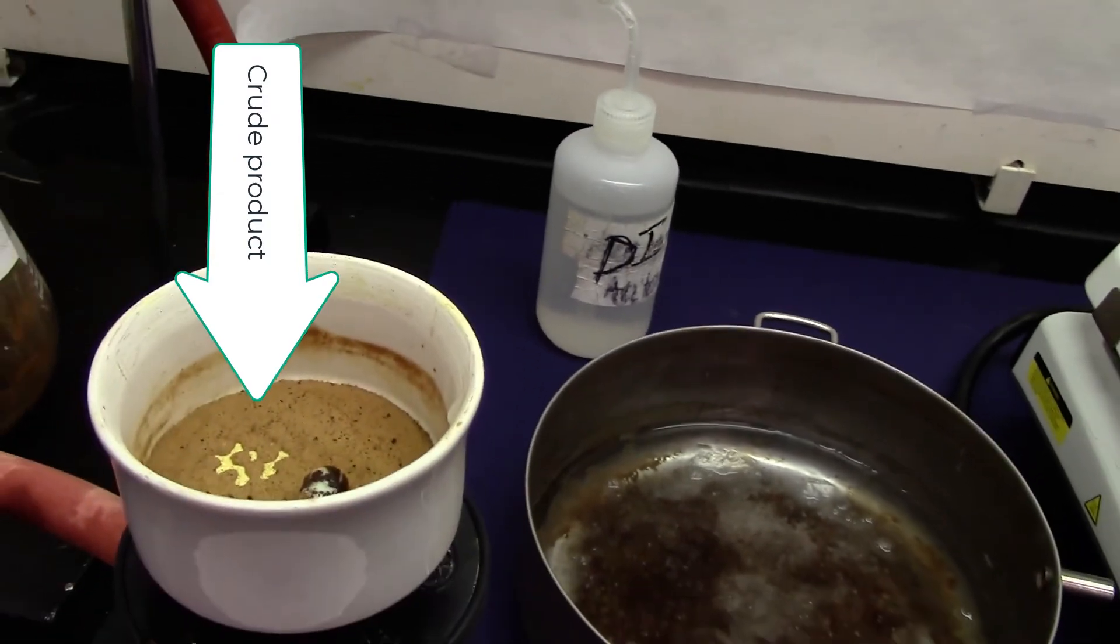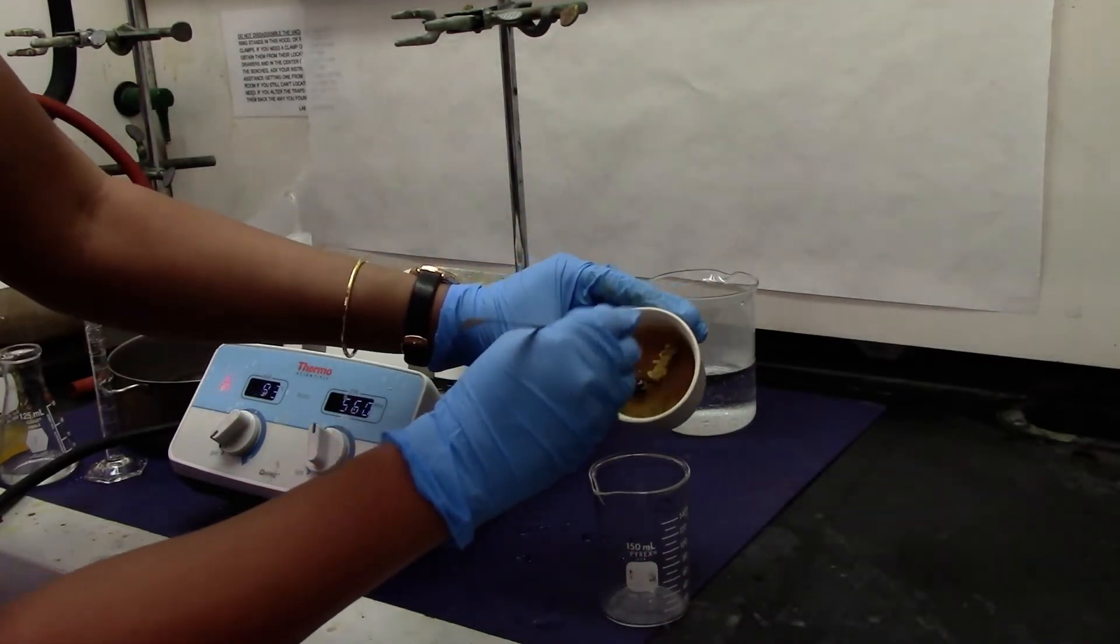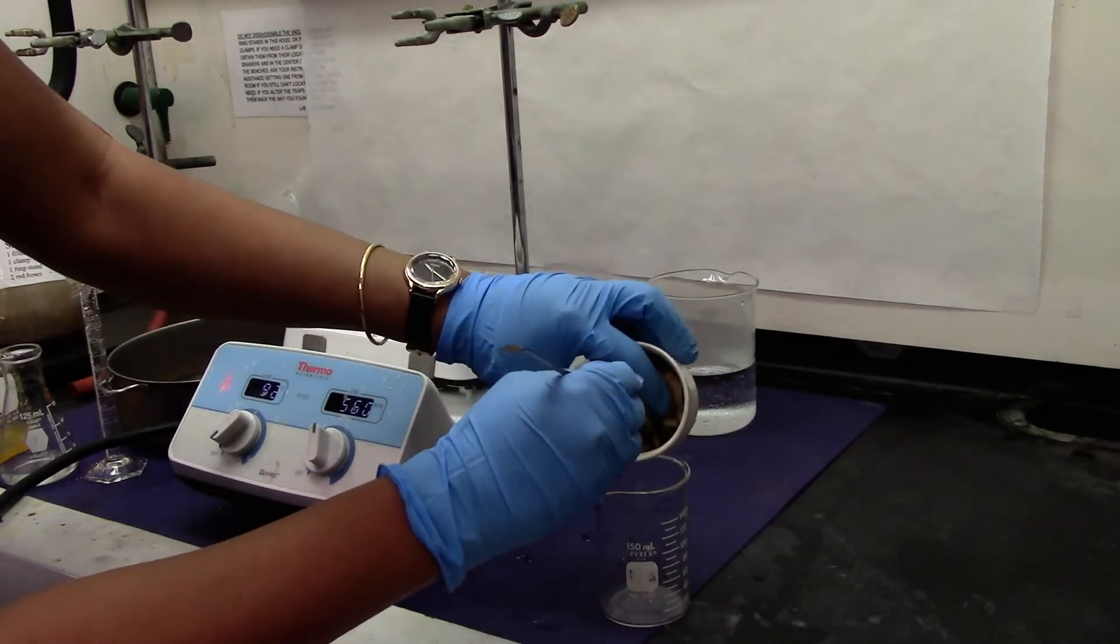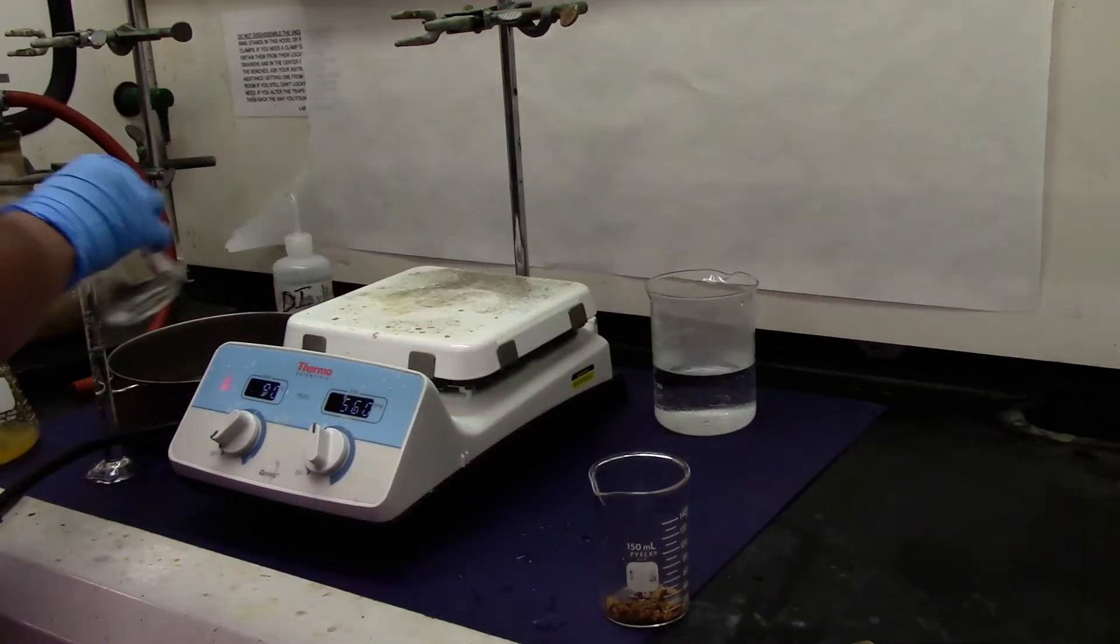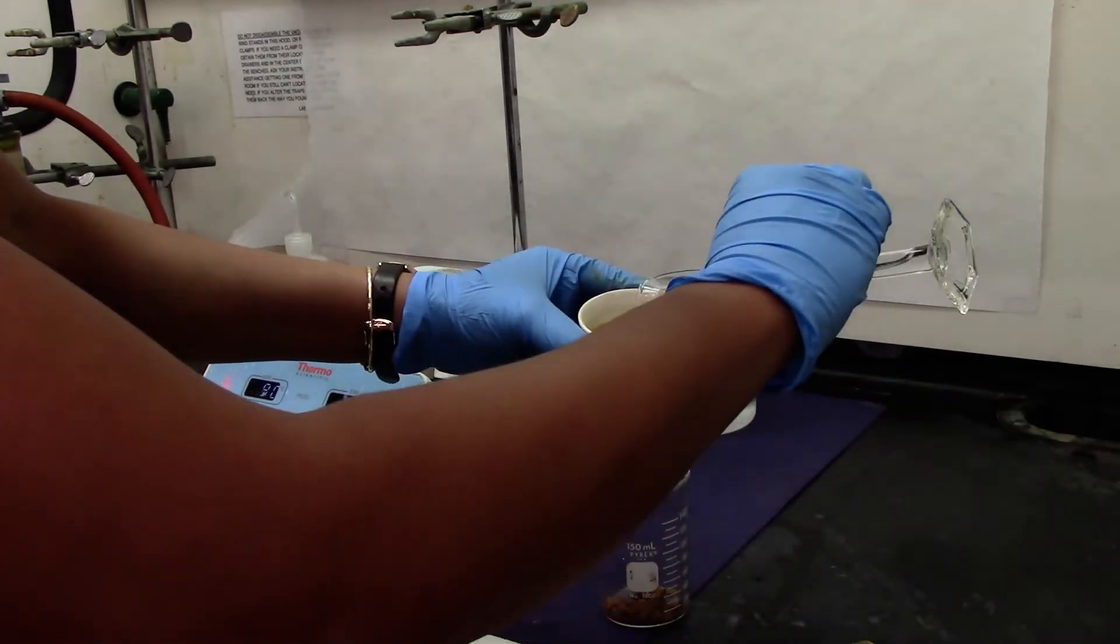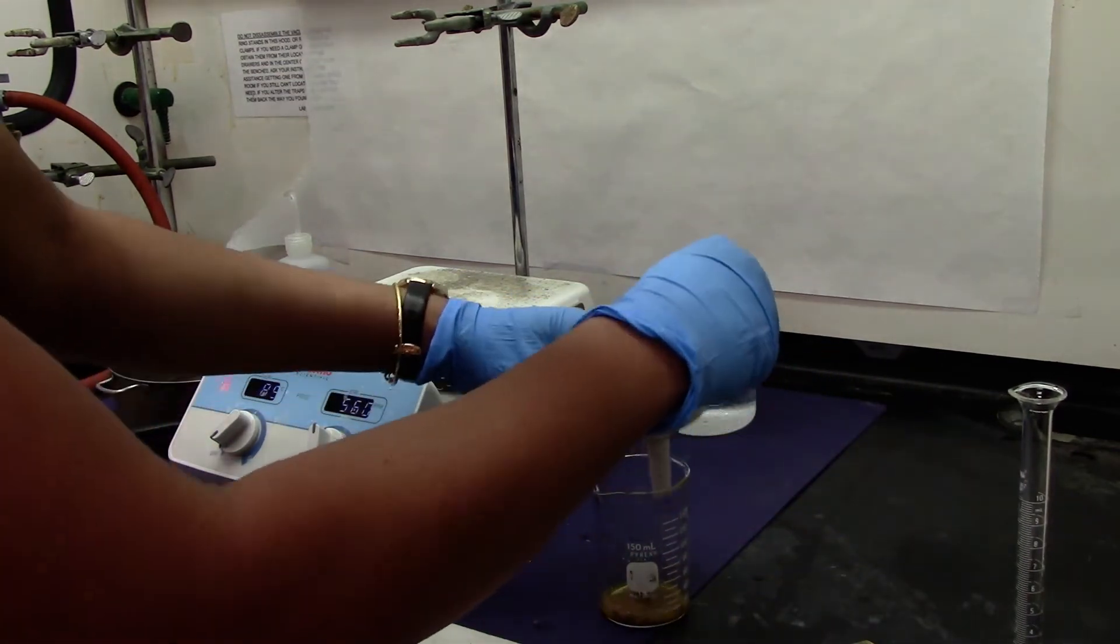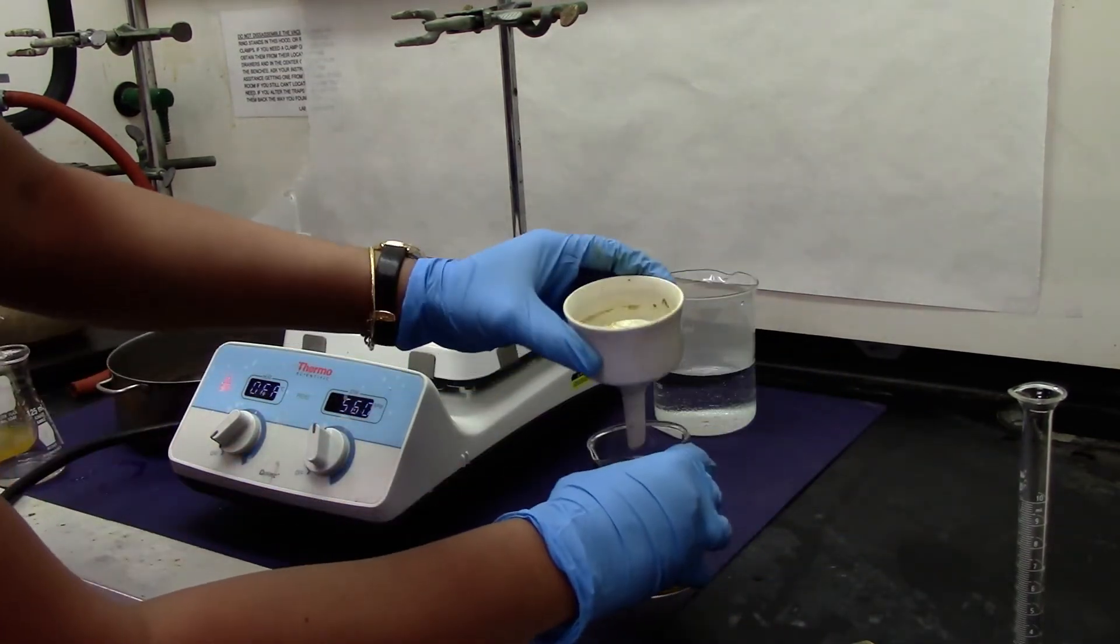So this is how the product looks like. We will go ahead and transfer our product into a beaker and add about 9 mL of ethanol. I am washing the funnel so I can get all the product into my beaker.